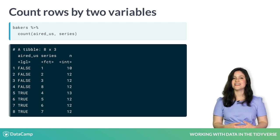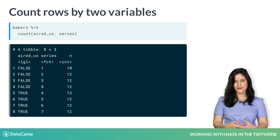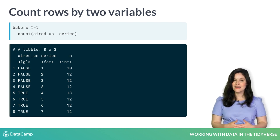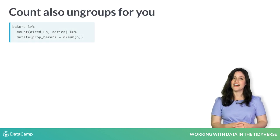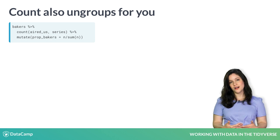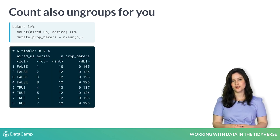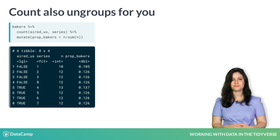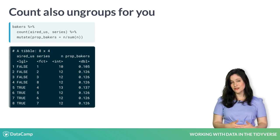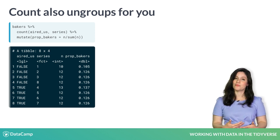Count helpfully does an extra ungroup step for you. Let's say that after counting, we add a mutate to make a new column with the proportion of bakers in each series for the whole show. If we use count before mutate, our proportion is right.